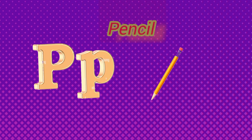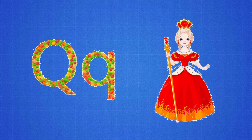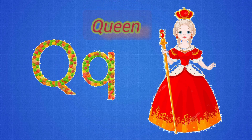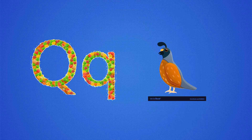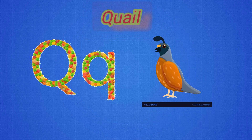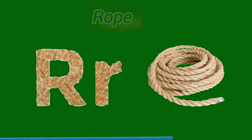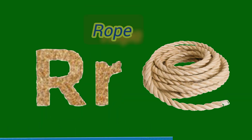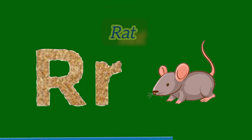P for panda and P for pencil. Q for queen and Q for queen. R for rope and R for red.